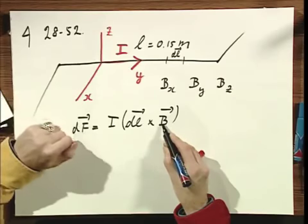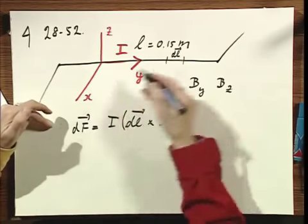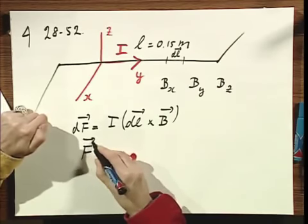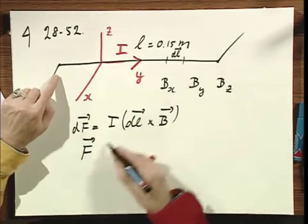So therefore, if I do the integration, I can say that the force on that whole wire l equals I times l cross B.